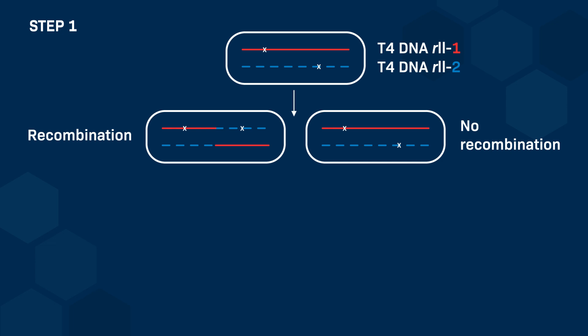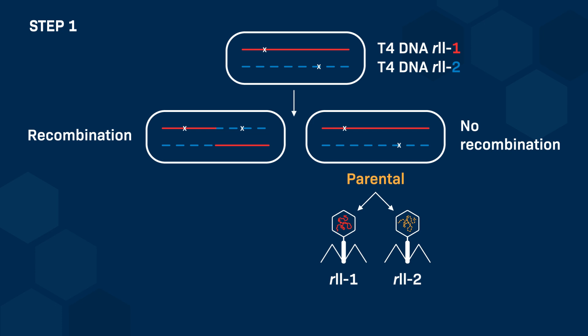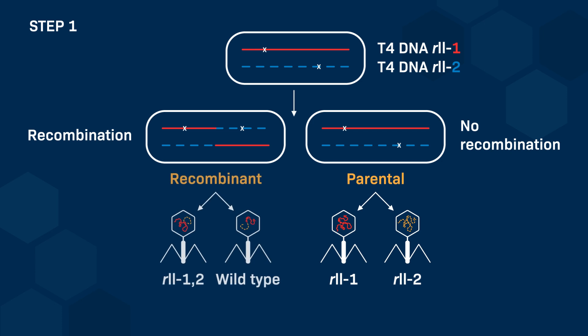Each of these four genomes will drive the production of new bacteriophages. Upon lysis, the progeny released contains four types of bacteriophages: the two parental rapid lysis bacteriophages, R21 and R22, and two recombinant bacteriophages, R212 and the wild-type.